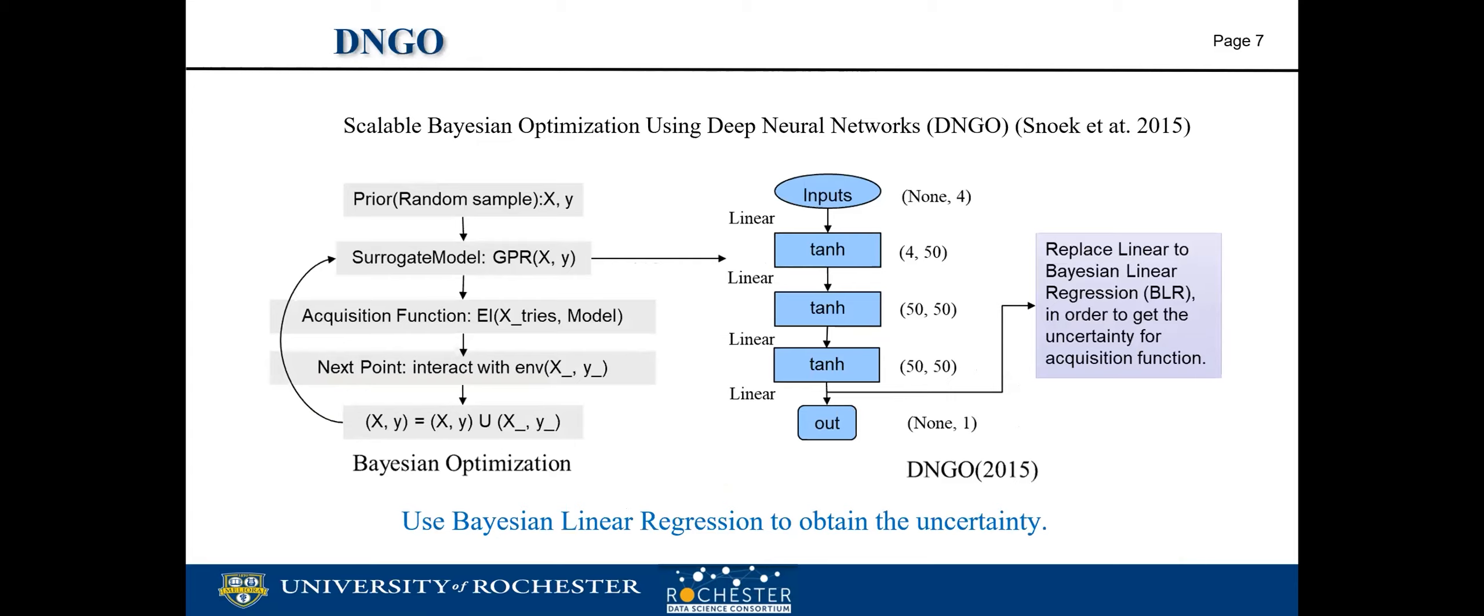Here are some previous researches. This one is called DNGO, Deep Neural Networks for Global Optimization. In their work, they replaced the surrogate model with a neural network, a very basic neural network. They conducted a two-stage training process. First, they train a deterministic neural network with fully connected layers. After that, they freeze the parameters of the neural network and replace the last layer by a Bayesian linear regression. So the neural network in this case is just like a feature extractor, and Bayesian linear regression is mainly used to quantify the uncertainty.